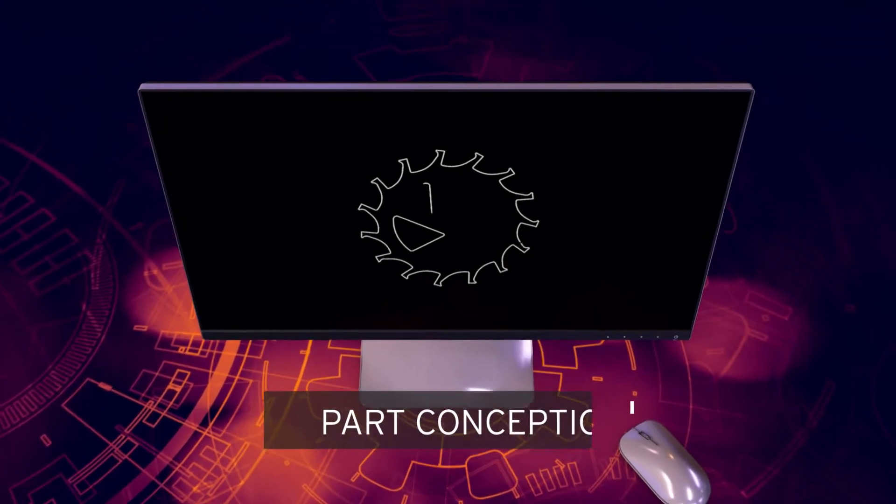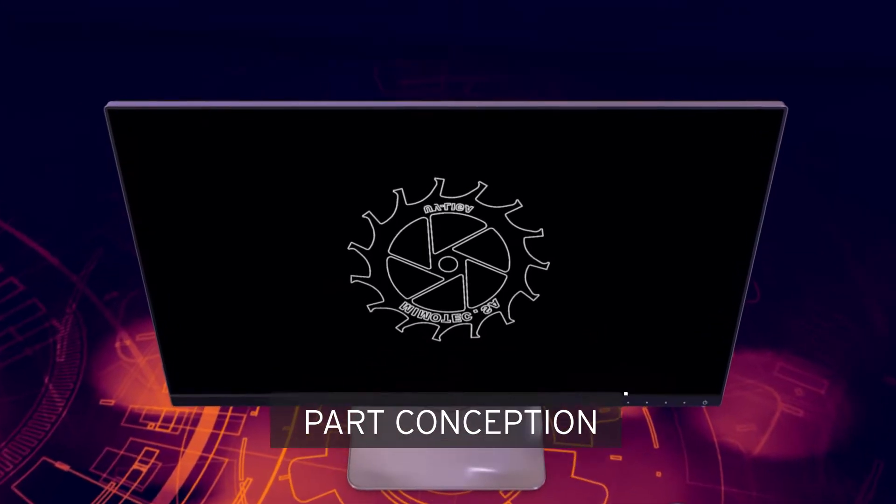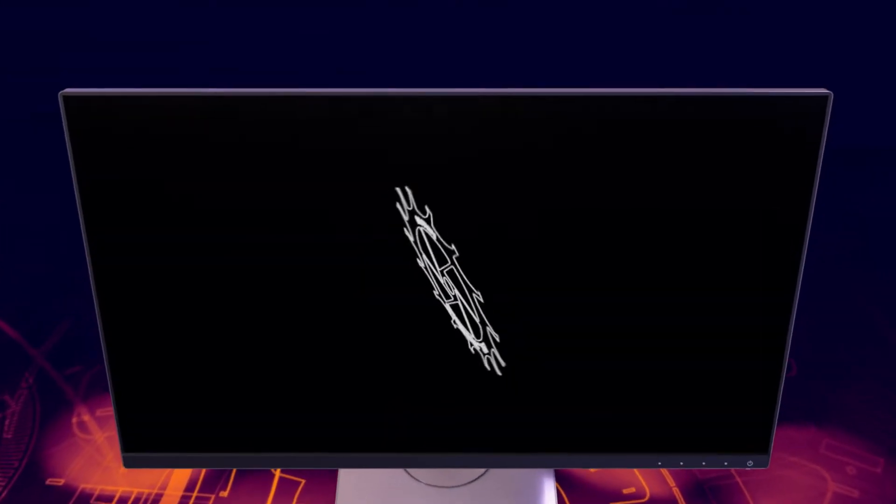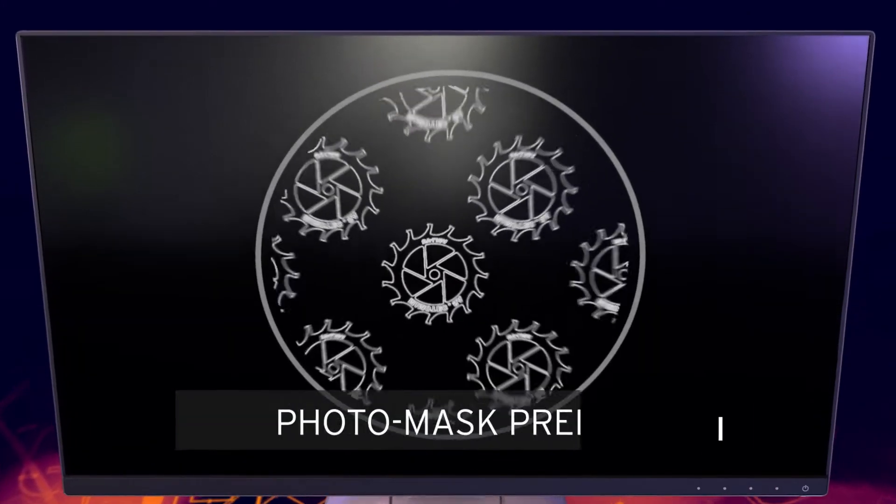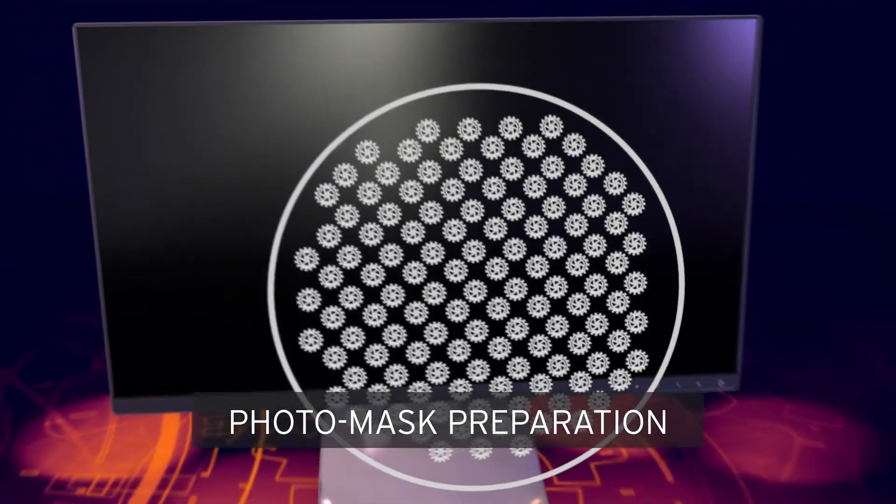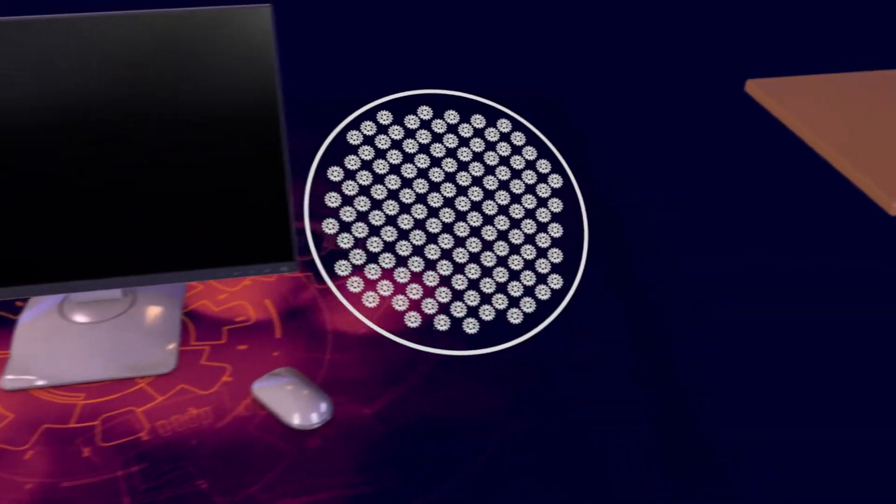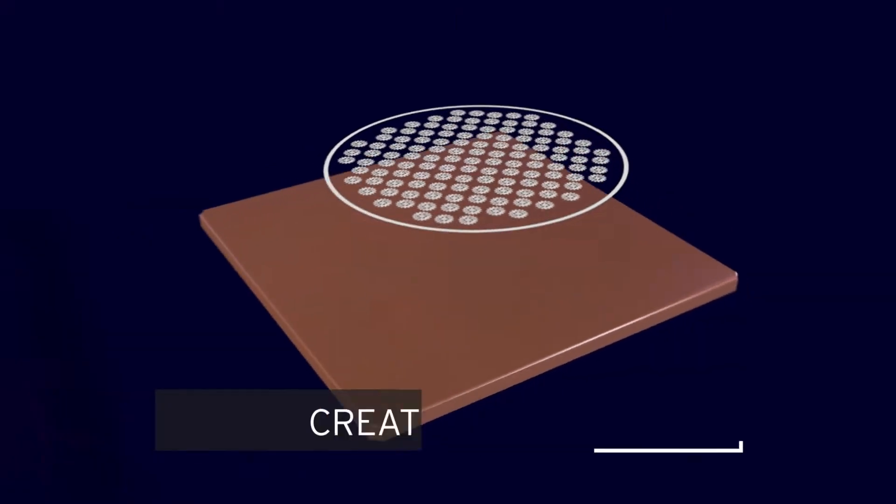Everything begins with a DXF file containing the profile of the part to be created. The contour is then adjusted to meet technological needs. Following this, that part is duplicated so that it covers the entire usable surface of the photo mask.